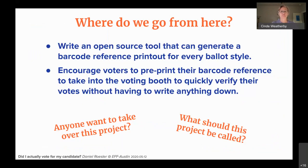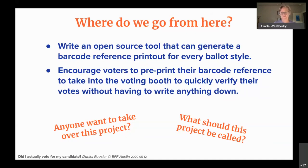Where I think we can go is: when you have the absentee ballot, you can write down the coordinates of all the selections and generate barcodes based on those coordinates. In theory, you could create a booklet or tool where you print out a cheat sheet with all the possible barcodes on it. One of the next steps is to create an open source tool that generates a barcode reference you can pre-print and take into the voting booth — no shorthand notation required, just a spot-check to make sure your selection matches your printout.